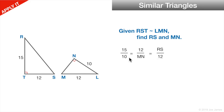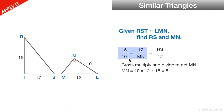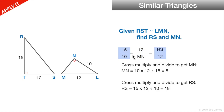We can cross multiply to solve for these. So 10 times 12 divided by 15 gives us MN. The same approach for RS: cross multiplying 15 times 12 divided by 10 gives us RS, which is 18. So MN is equal to 8 and RS is equal to 18.